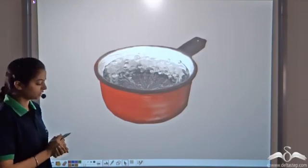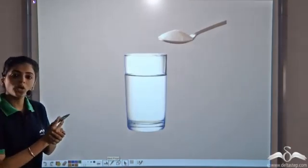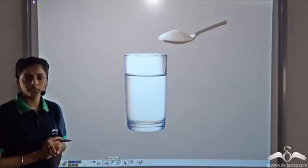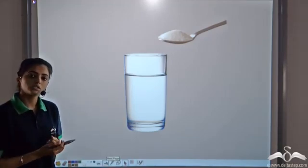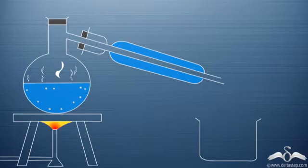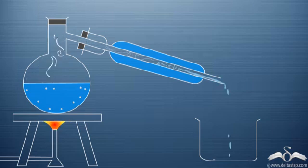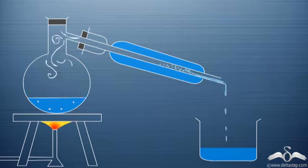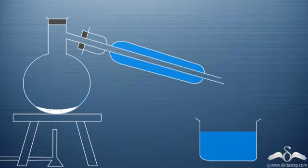Now observe another process. You add sugar to water, dissolve it, and now if you want this sugar back, you can carry out distillation. When you carry out distillation, the liquid water changes into the gaseous state, it recondenses, we can collect water, and we get back sugar.